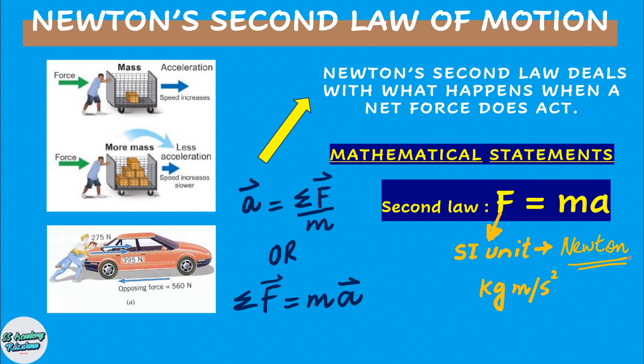SI unit of force is Newton which is equal to kilogram meter per second square. One Newton is the force that produces an acceleration of 1 meter per second square in a body of mass 1 kg. It must be noted that Newton is not a base unit but a derived unit because we derive it from the units of mass and acceleration.